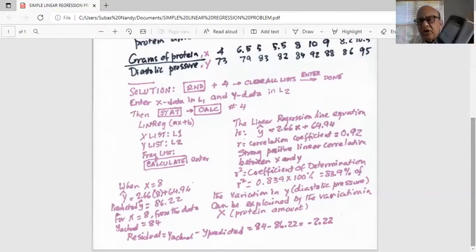The X list is L1, Y list is L2. Now you do zoom 9 and you'll see the scatter plot. It is going up the hill, that is positive slope like we have found out, but there are two points which is slightly off it or away from the rest of the data points.